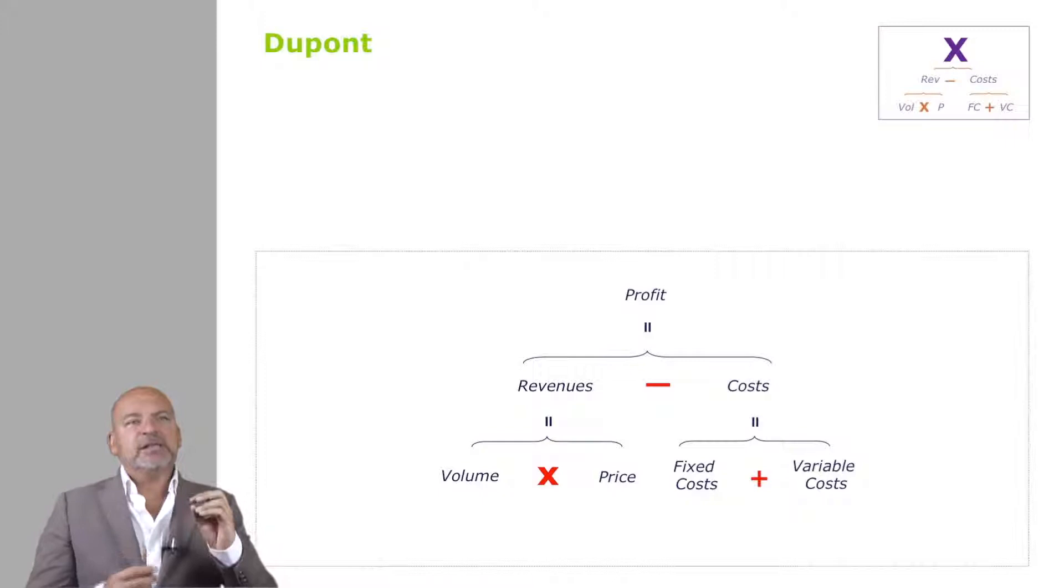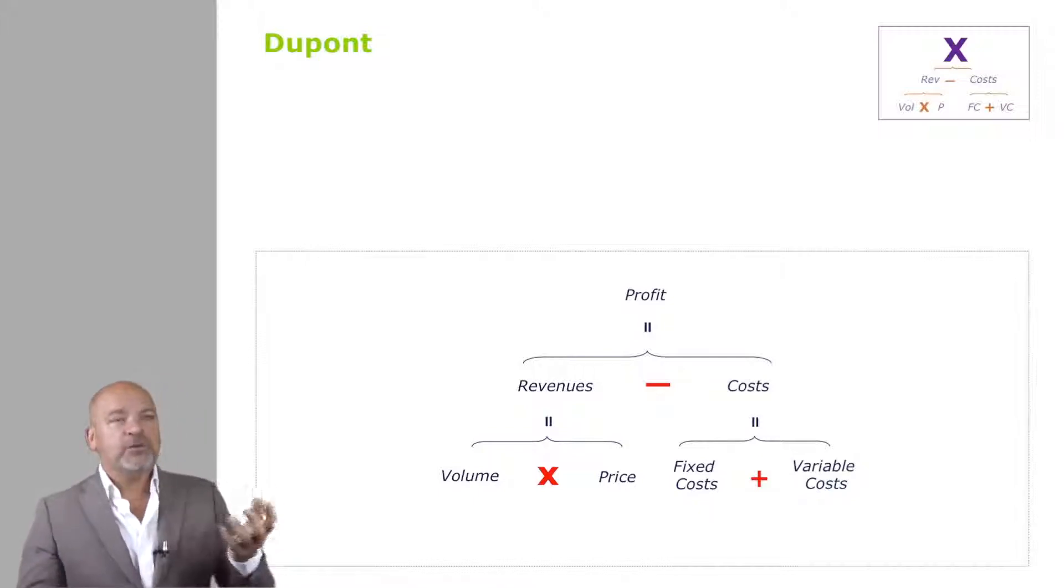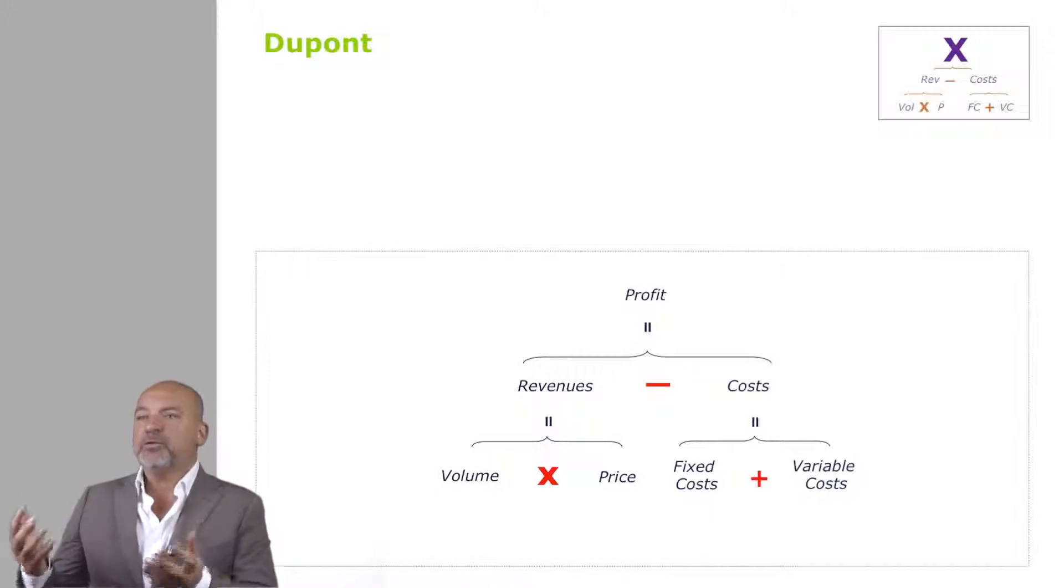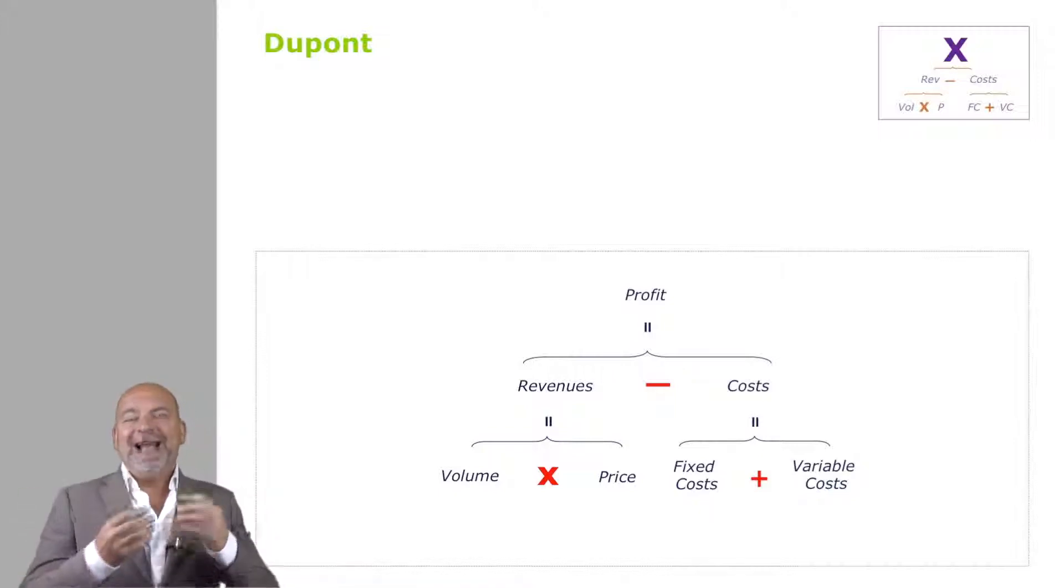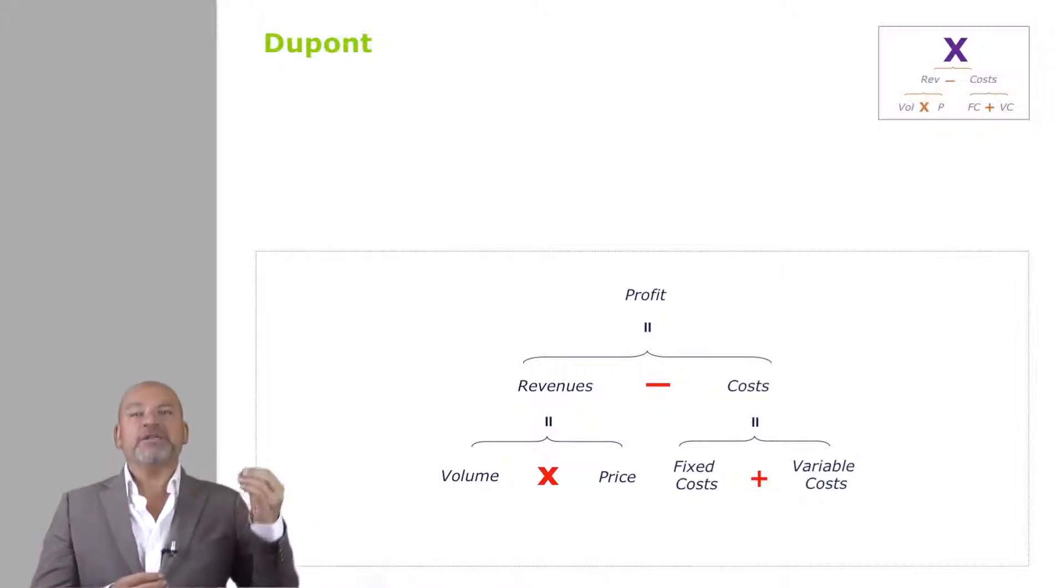Imagine if instead of putting profit at the top, I put staff costs, or audience figures, or product portfolio, or effectively any issue that you're trying to either maximize or minimize, any quantitative issue.